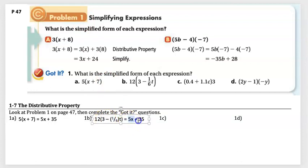12 times 3 is 36, and 12 times negative 1/6t is basically 12 divided by 6, which is 2t. Let me double check. Yep, 12 times 3 is 36, and 12 times negative 1/6t is 2t. All right, cool.